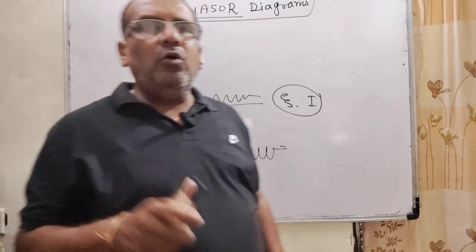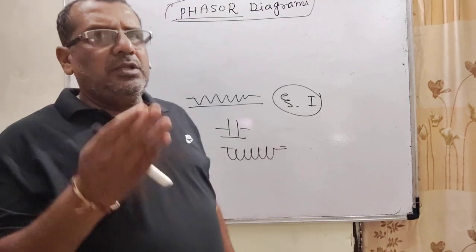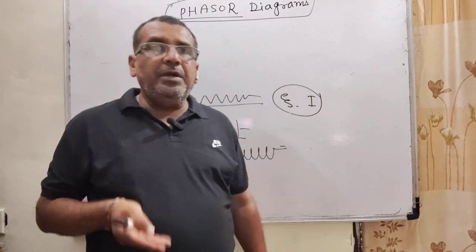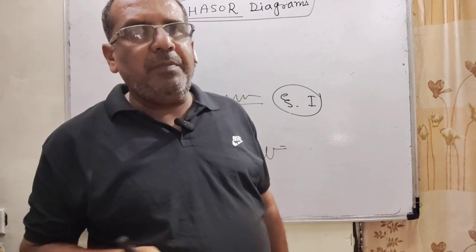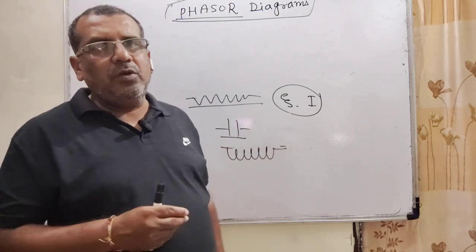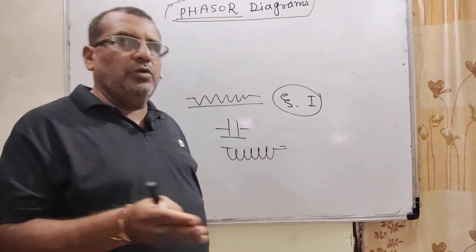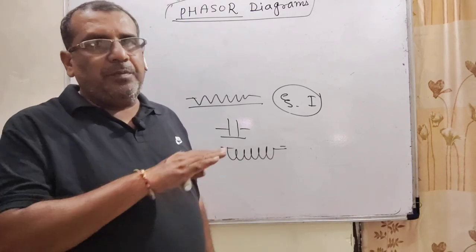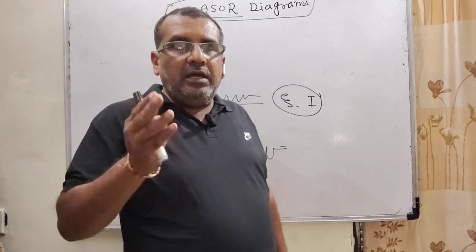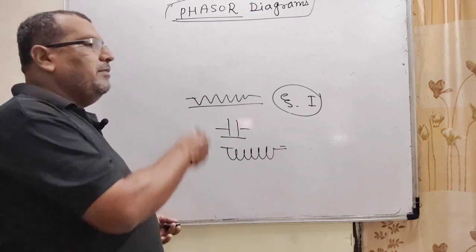इसे समझने के लिए एक example लेते हैं — overhead tank, मतलब घर के ऊपर पानी की टंकी। जब तक उसमें पानी है, current का flow होगा और EMF और current साथ चलेंगे। लेकिन initial stage में पानी भर रहा है पर नीचे basin में पानी नहीं आ रहा — मतलब potential है पर current नहीं है। इस case में potential आगे चल रहा है और flow पीछे। और आखिरी stage में ऊपर की टंकी में पानी खत्म हो चुका है।